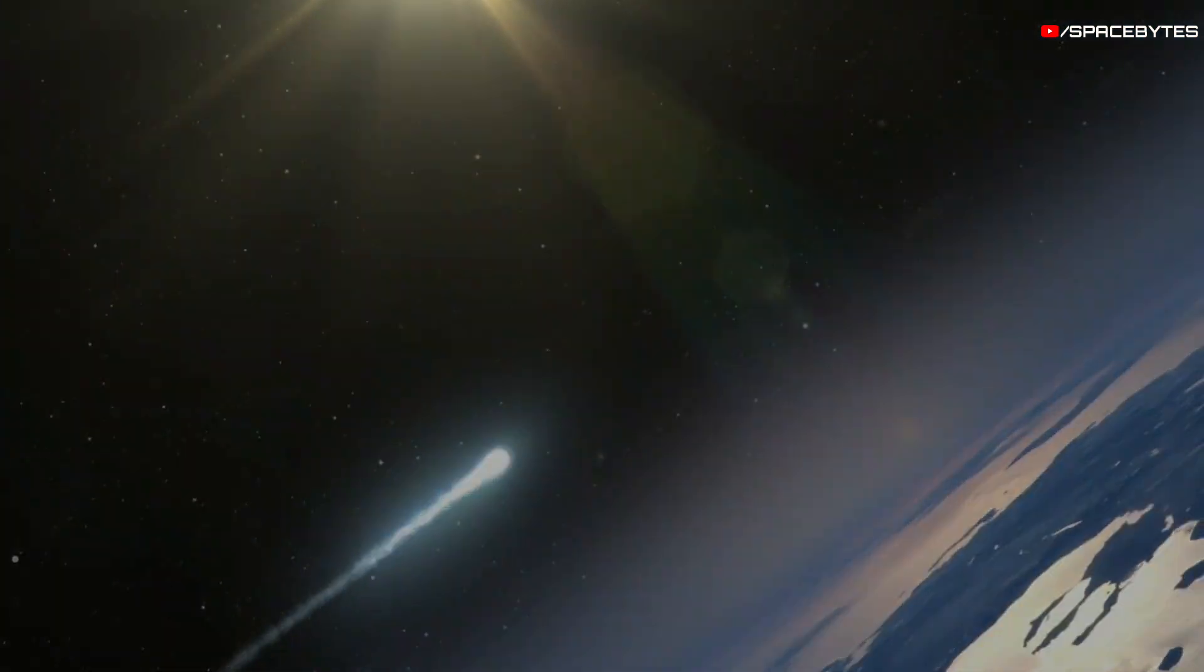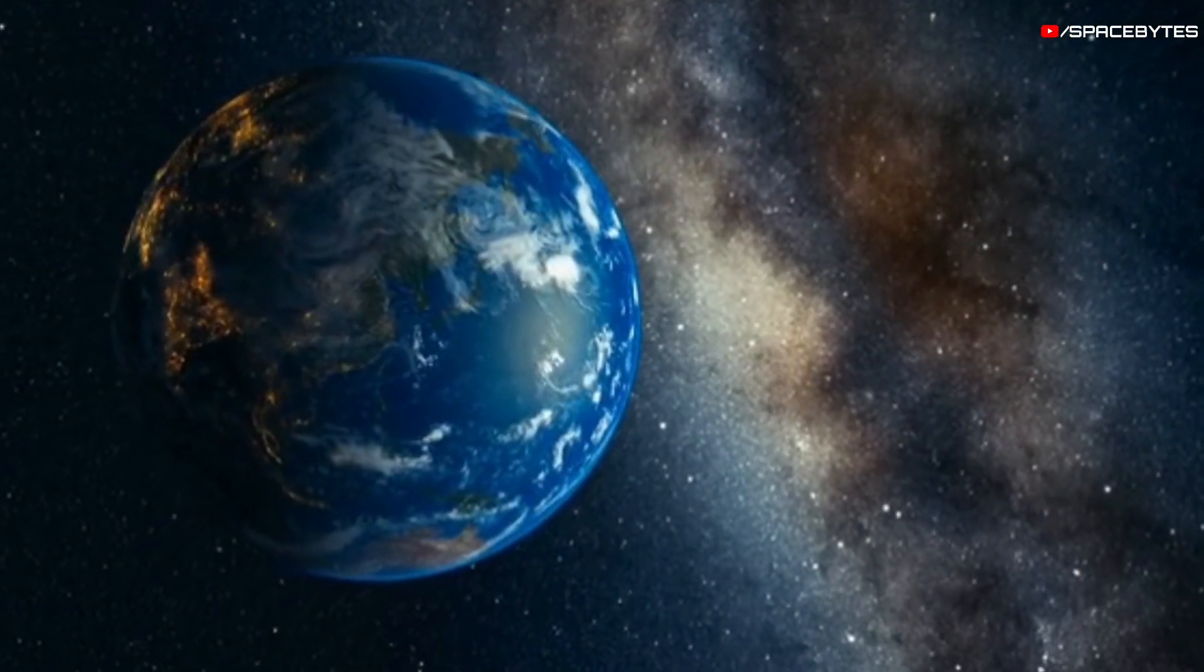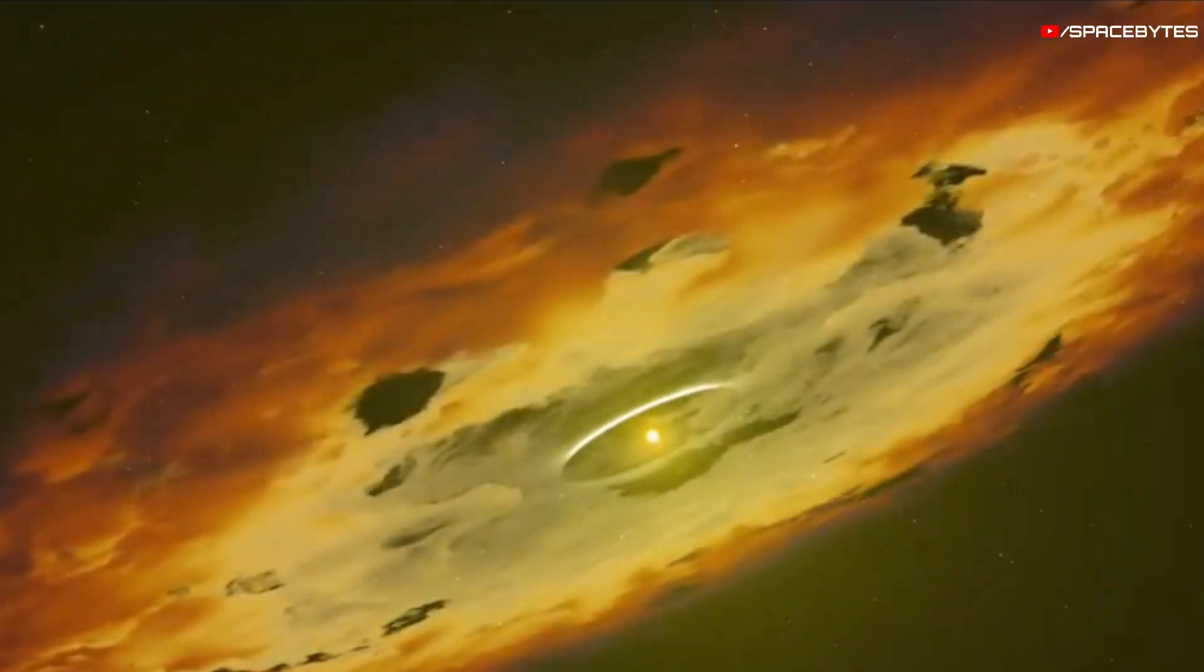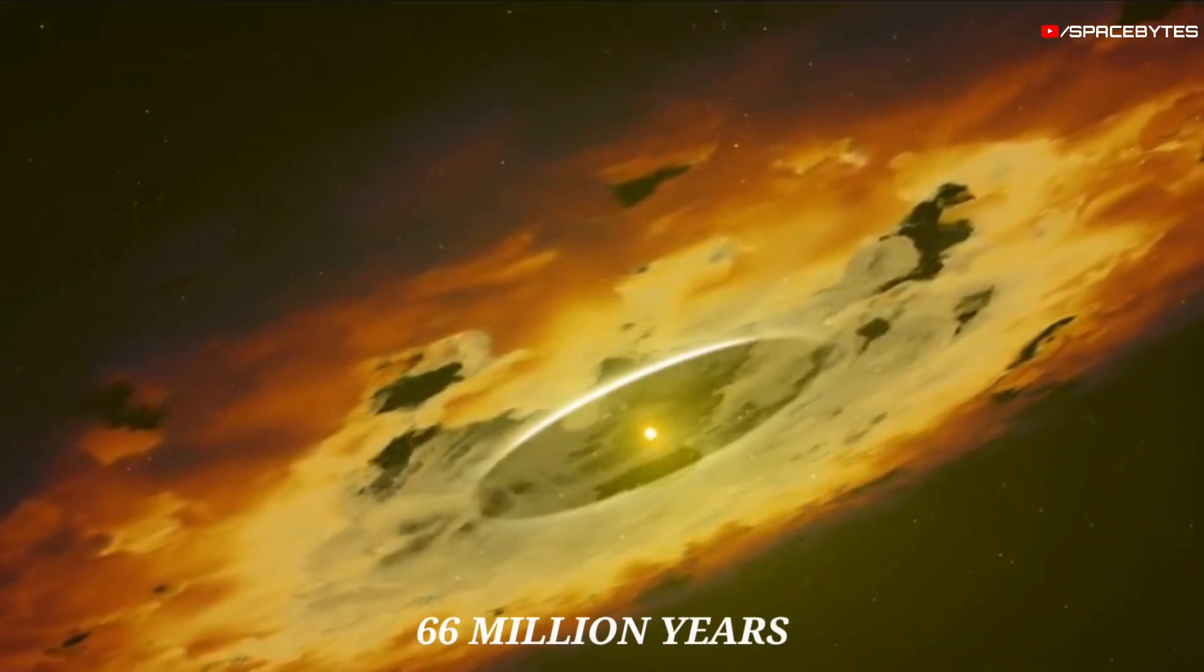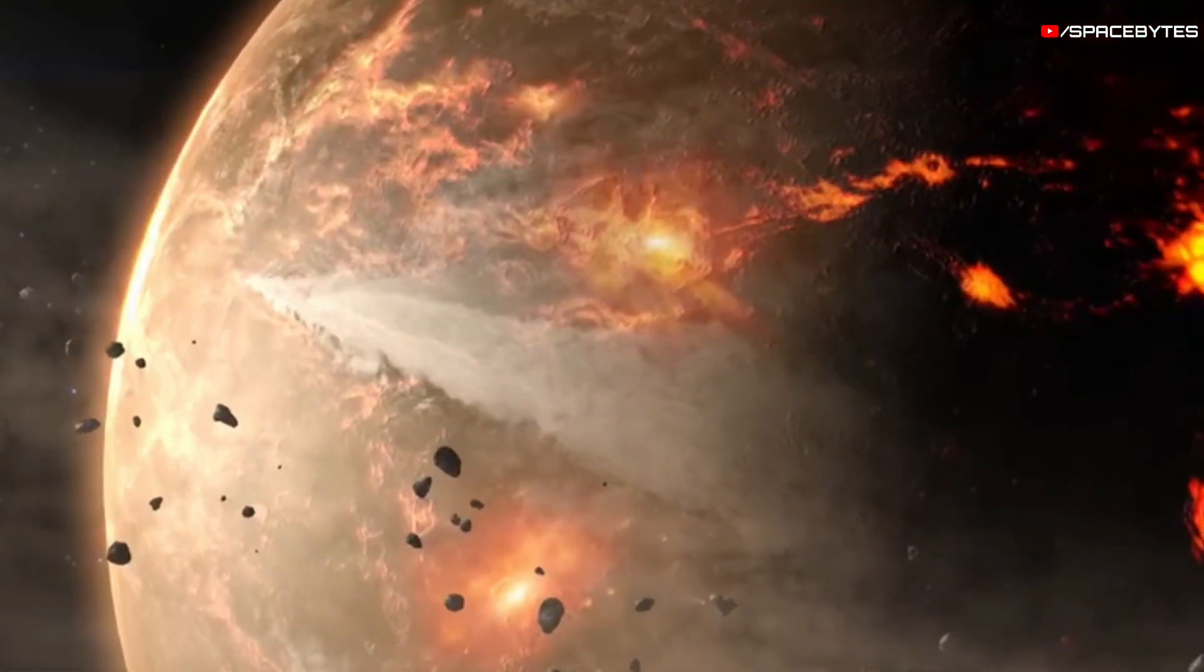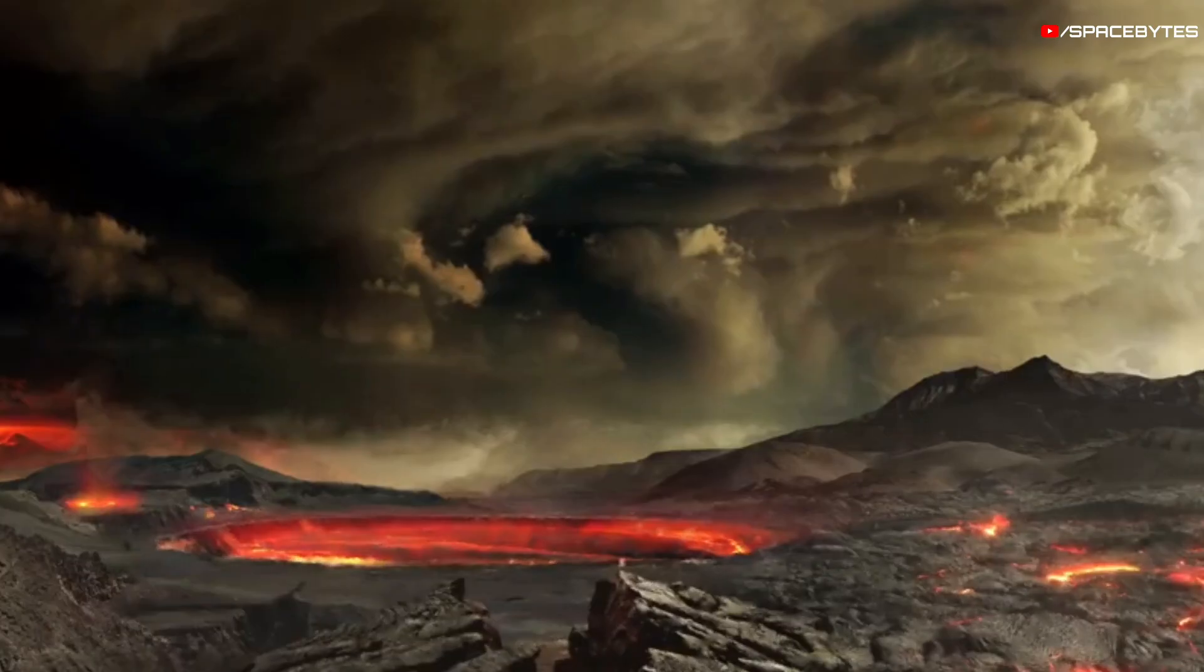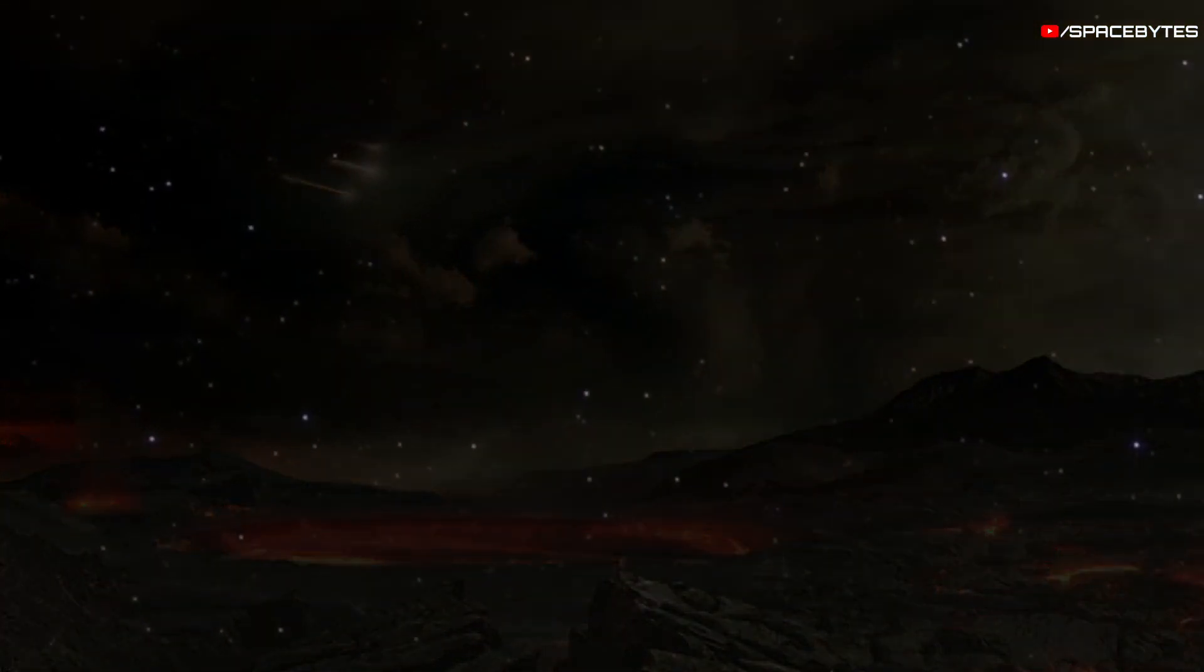Asteroids and comets have caused drastic changes on Earth numerous times throughout history. For instance, 66 million years ago, an asteroid wiped out the dinosaurs and transformed the planet into an inhospitable place.